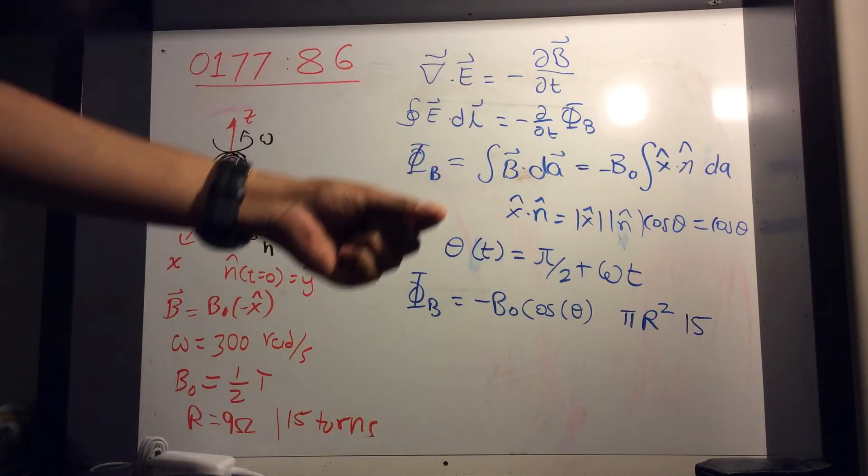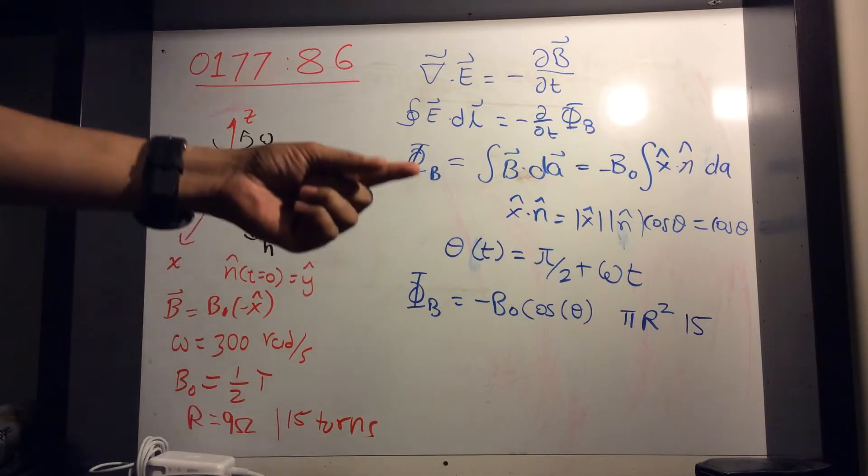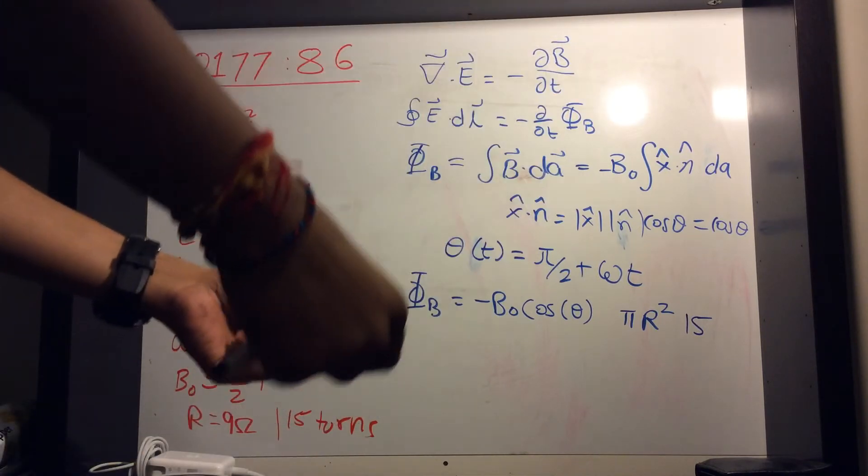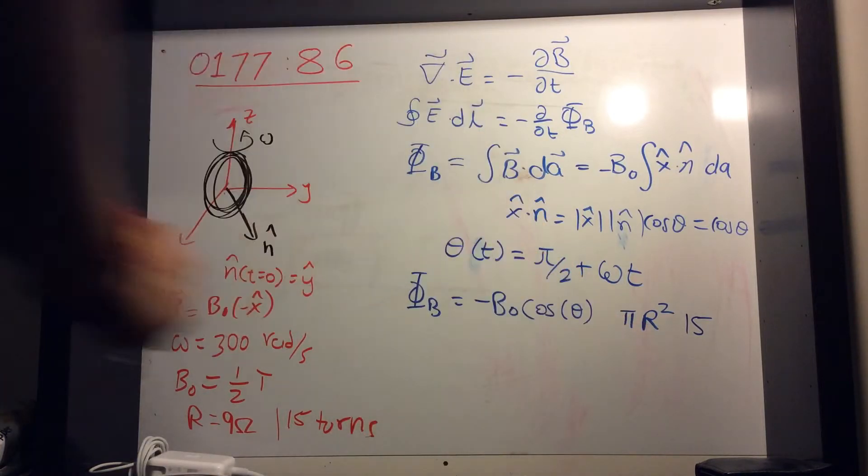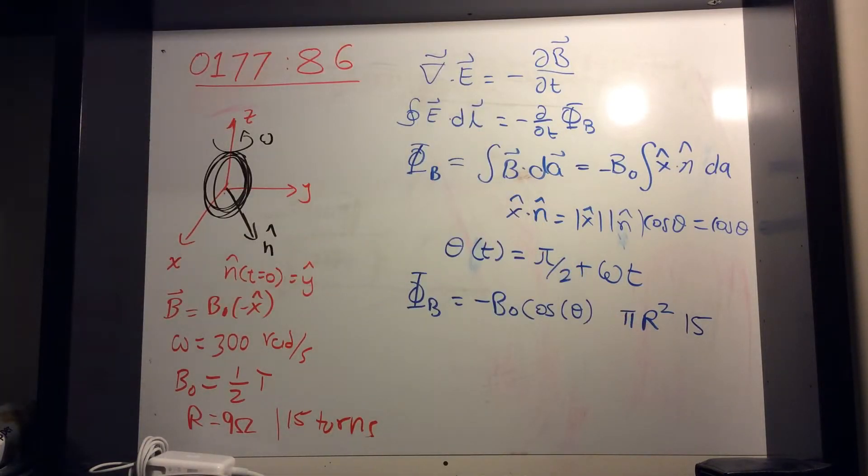Think about that. If you have a soap bubble and you make a ring, then you get one soap bubble. But then when you twist it again, you get a second one. That's why it's 15 times pi r squared. That's the area. Okay.